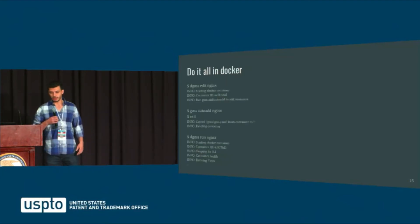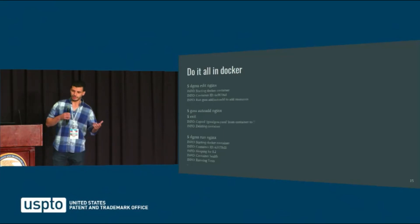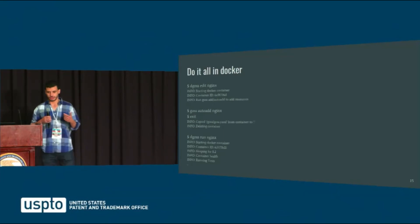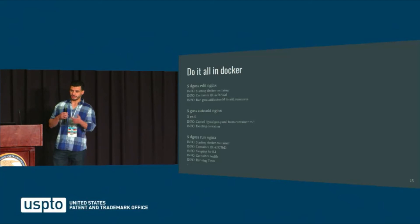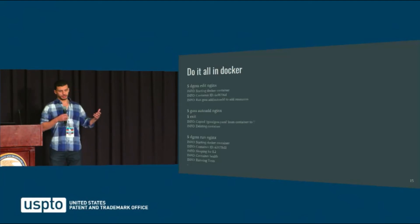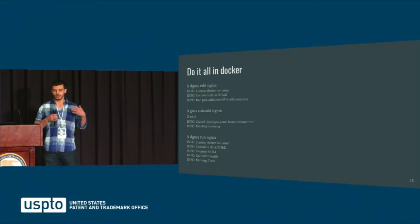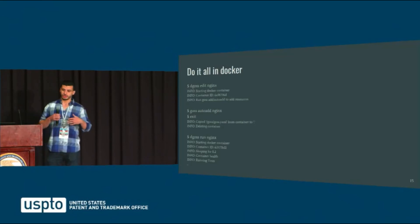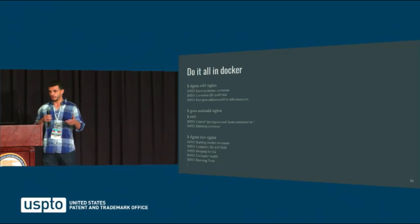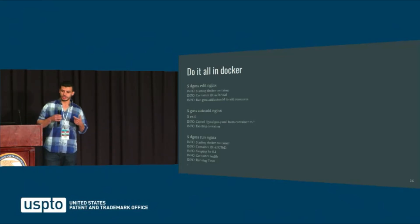How do you do this in Docker? Well, there's a wrapper that comes with GOSS called dgoss. When you do dgoss edit nginx, it'll spin up your Docker container, drop you in an interactive shell, and in there you can do your goss add or your goss auto-adds. Once you're done with that, you exit out, and it copies your goss YAML back to your host system.